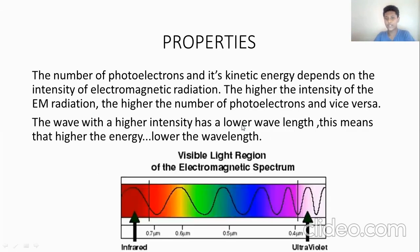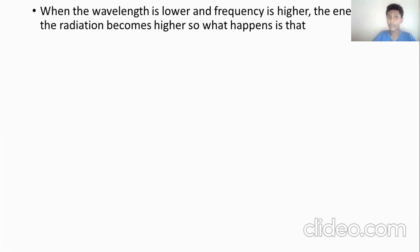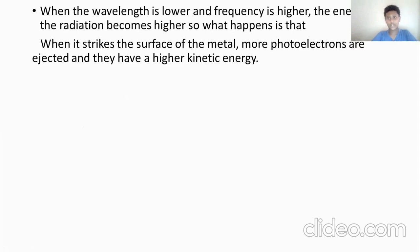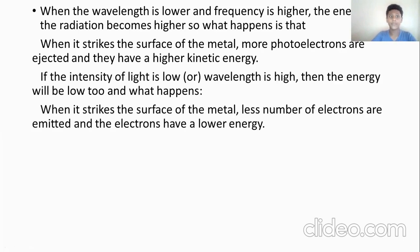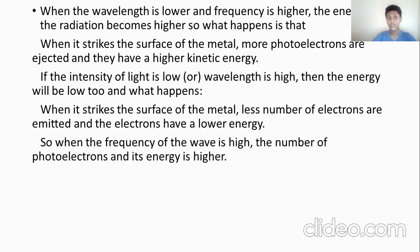This is the visible light region of the electromagnetic spectrum. Ultraviolet has the least wavelength and infrared has the highest wavelength. What you can see in the middle is called visible light. When the wavelength is lower and the frequency is higher, the radiation energy becomes higher. So when it strikes the surface of the metal, more photoelectrons are ejected and they have a higher energy, or vice versa — fewer electrons emitted with lower energy. When the frequency of the wave is high, the number of photoelectrons and their energy is higher, and when the frequency is higher, the wavelength is lower.